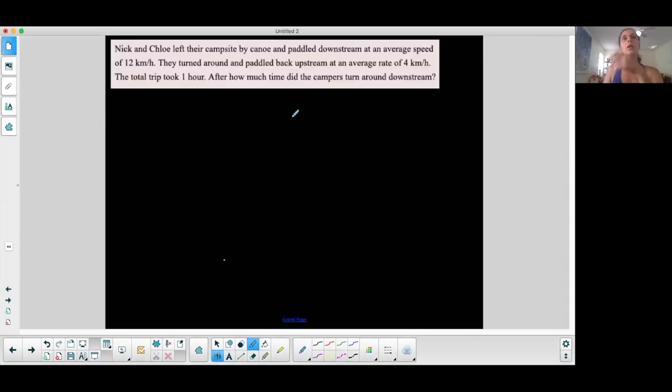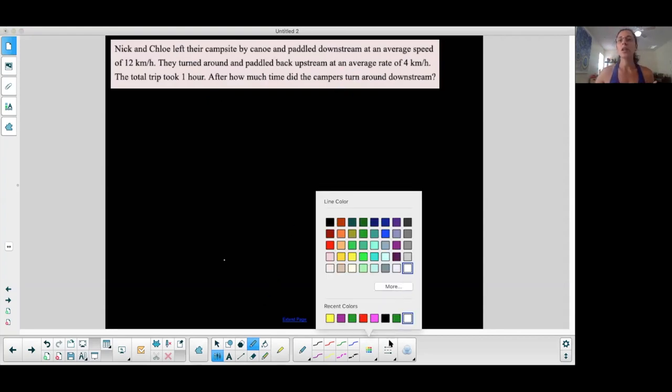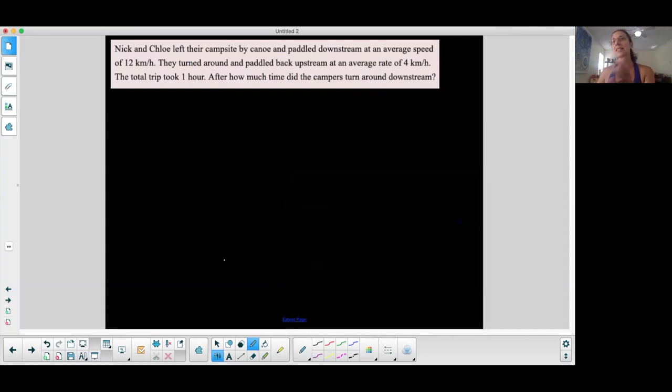Okay, one more dirt problem here. So I found this online, I'm going to use it. Nick and Chloe left their campsite by canoe and paddled downstream at an average speed of 12 kilometers per hour. They turned around and paddled upstream at an average rate of 4 kilometers per hour. The total trip took one hour. After how much time did the campers turn around downstream? So I hear rate, I hear time, I don't necessarily hear distance, but obviously there is a distance that they're traveling. So it's a dirt problem.